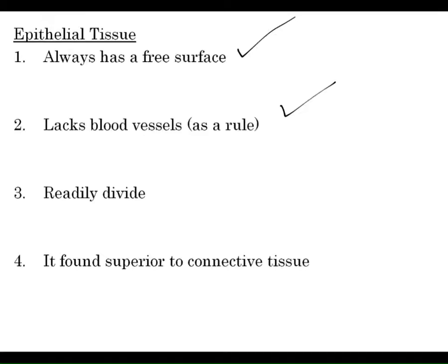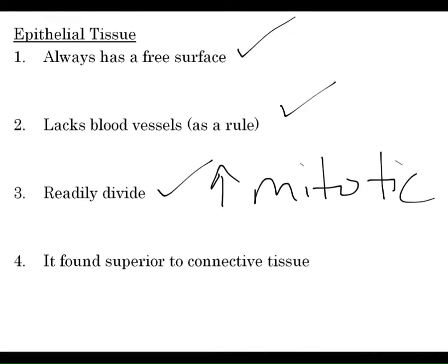No blood vessels in epithelium means you'd have to really chomp your tongue or burn it to bleed inside the mouth. Number three: these cells are constantly dividing — they are highly mitotic, replacing themselves constantly. These are the most rapid-growing cells in your body. The epithelial cells lining your gut can replenish themselves every eight hours or so. This is why a cut tongue or burned skin recovers within a couple of days. This is different from the heart or brain, where cells do not readily divide and replace themselves.